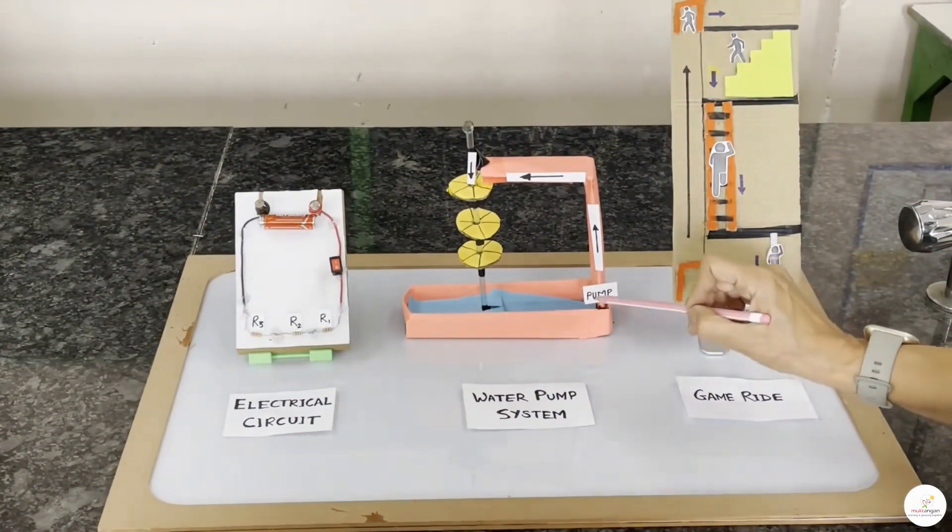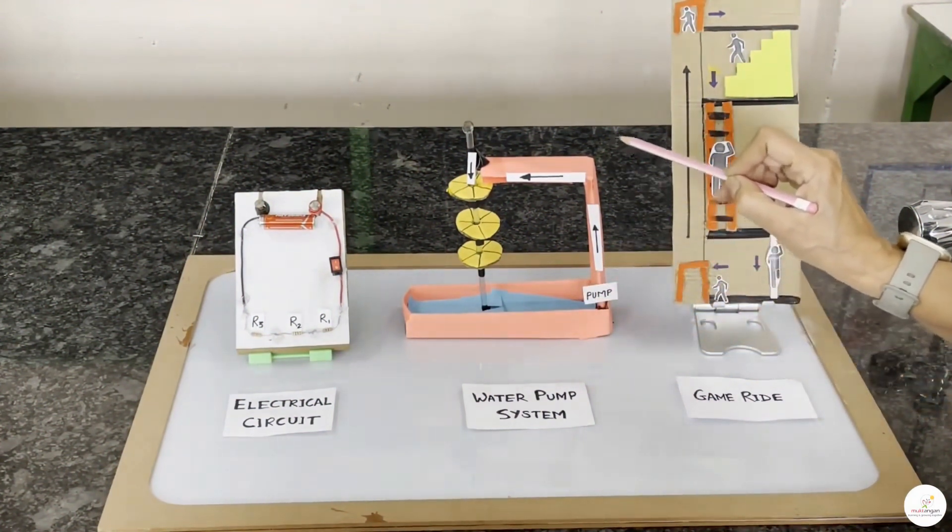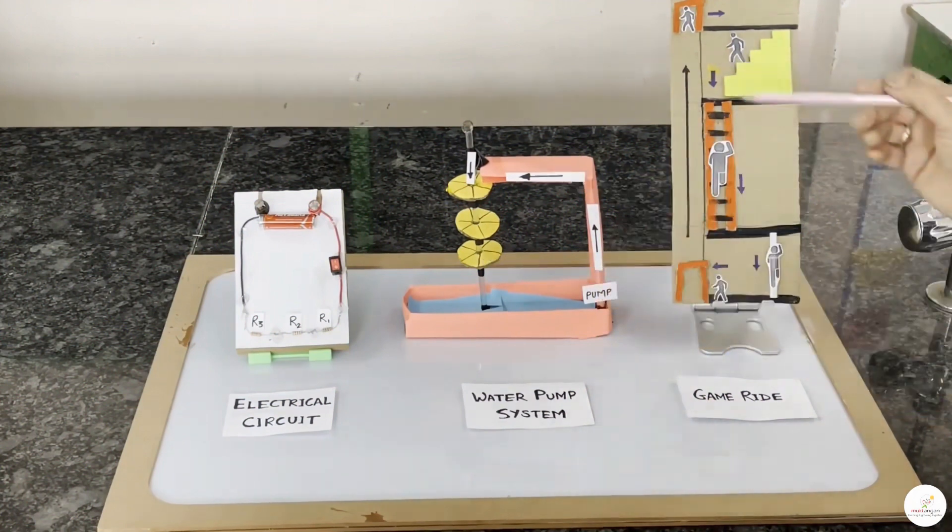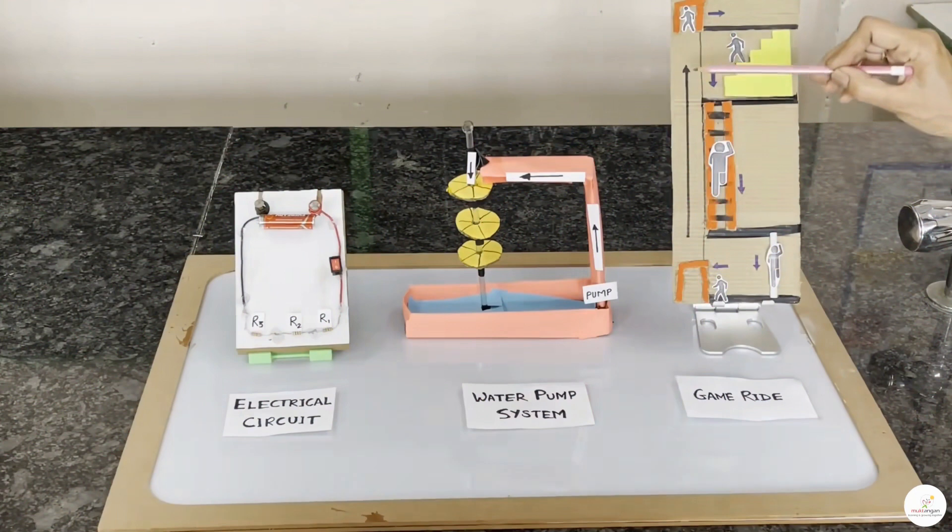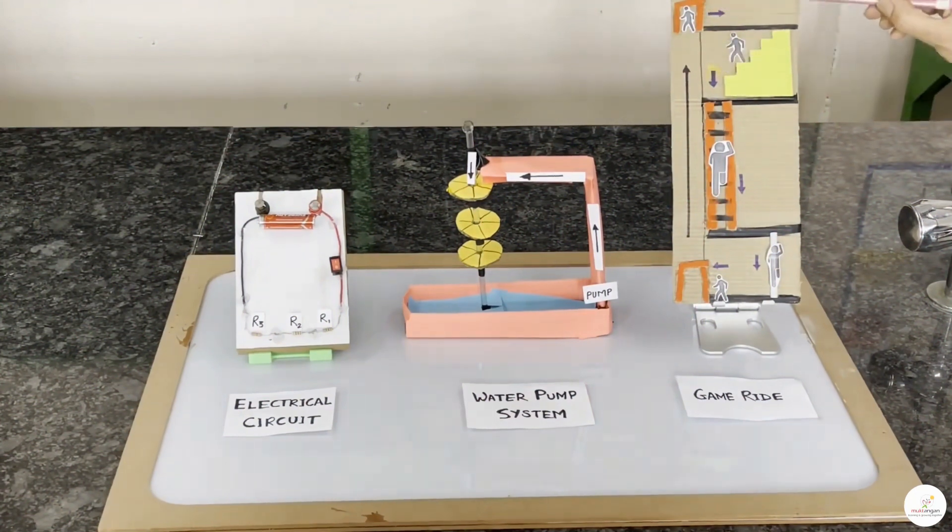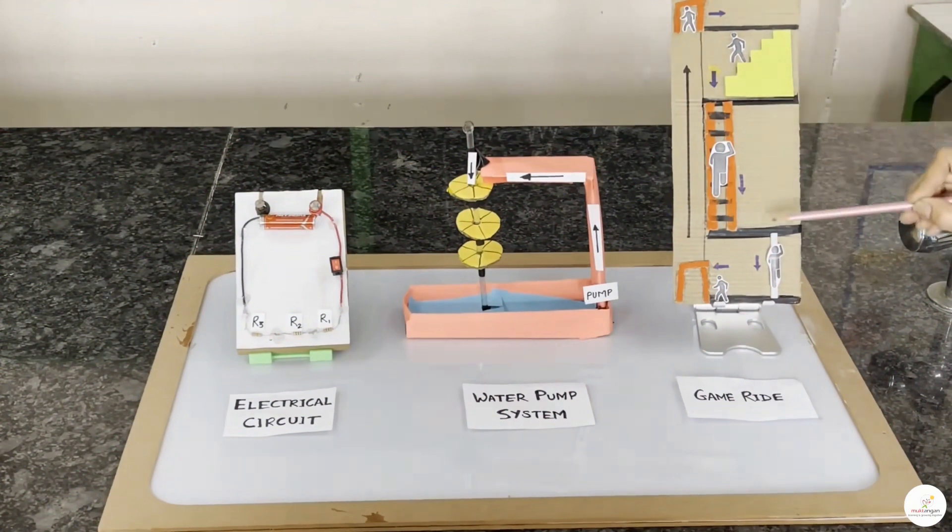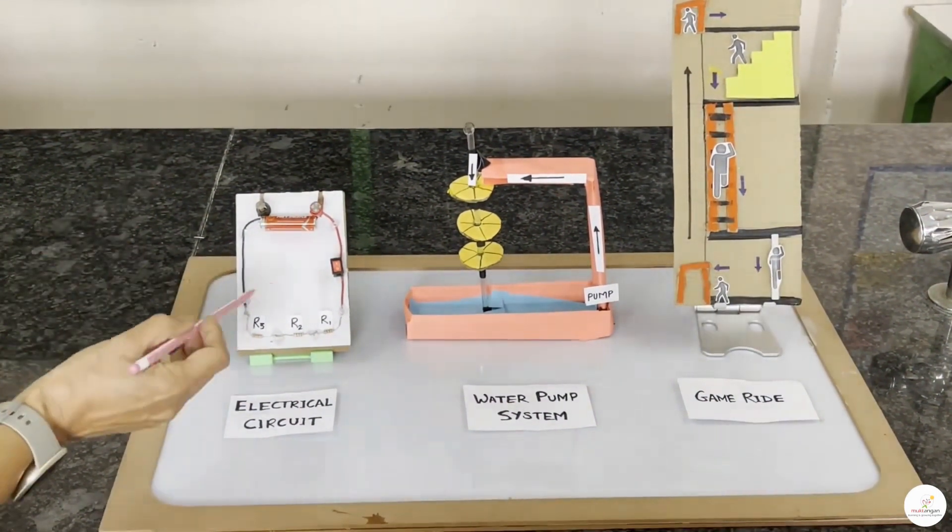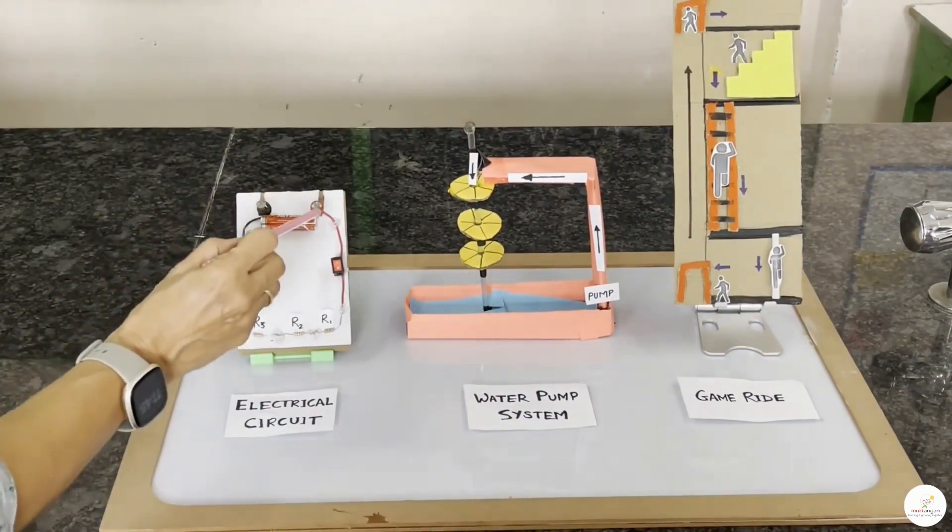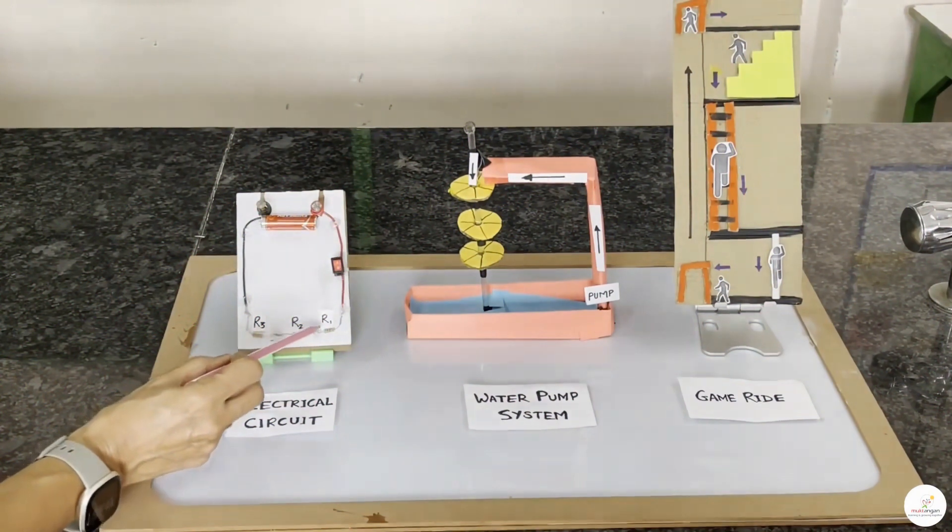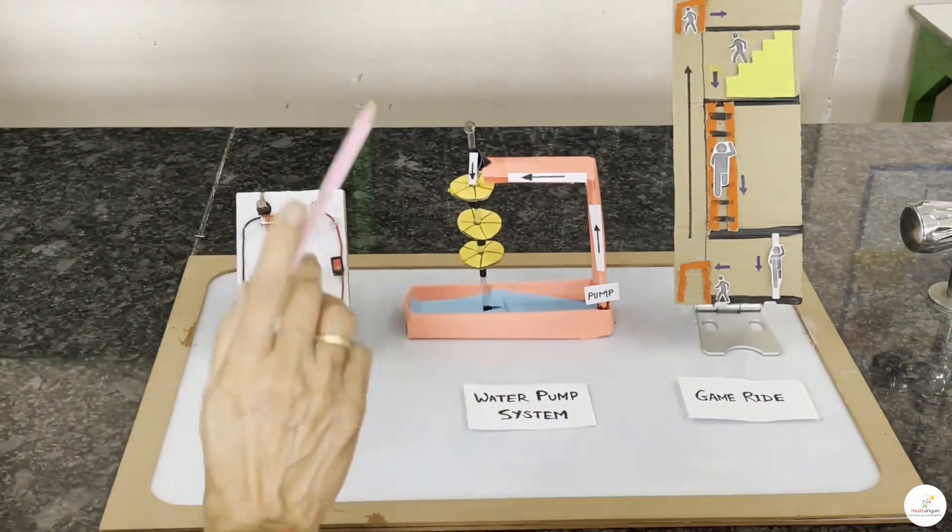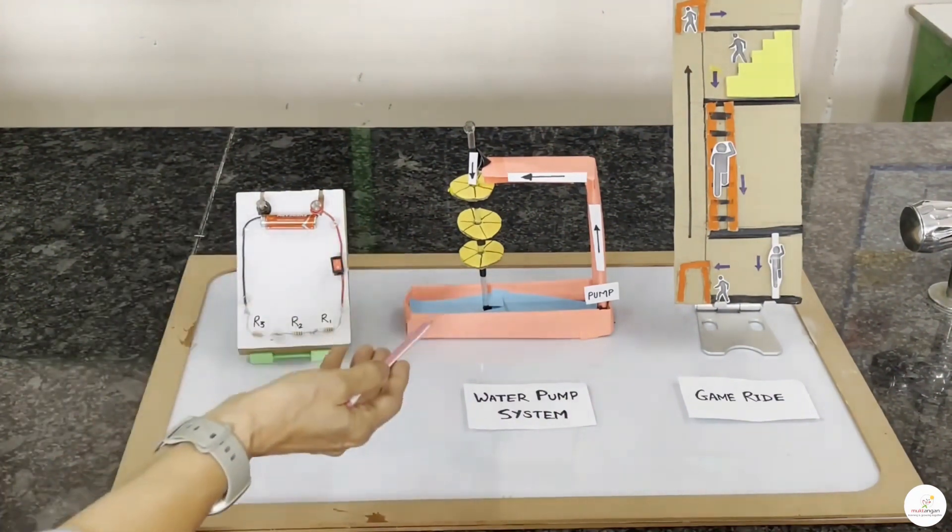Yes. In the water pump system model, three wheels are attached in series. And in the game ride model also, the staircase, the ladder and the pole are connected in a sequence, that is one after the other. Good observation. If you look at the second model, when the water gets pumped up to the top, there is only one path for it to come down through wheel 1 to wheel 2 and wheel 3. In model 3, people ride up using the elevator to the top and then they come down using the staircase, the ladder and via the pole. There is only one path.